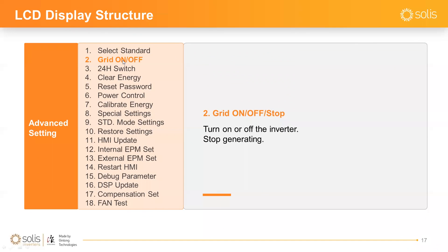Grid On/Off has three options: On turns the inverter on; Off opens the AC relays, physically disconnecting the inverter from the grid; Stop stops generation but keeps the AC relay closed. That is the key difference between Grid Off and Grid Stop.